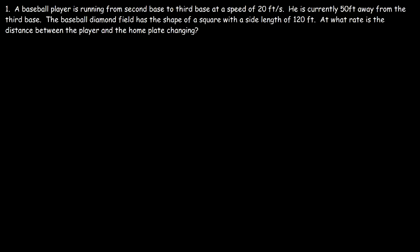In this video we're going to go over the baseball diamond problem. We have a baseball player running from second base to third base at a speed of 20 feet per second. He is currently 50 feet away from the third base. The baseball diamond field has the shape of a square where all the side lengths are 120 feet. We need to determine the rate at which the distance between the player and the home plate is changing.